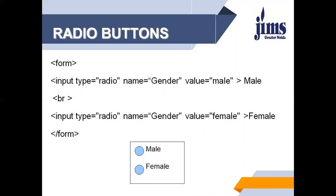In this example we have taken two radio buttons: male and female. Input type equals radio, name equals gender, value equals male. The other radio button: input type equals radio, name equals gender, value equals female. The name of both radio buttons will be the same and the value will be different — whatever value you want to display beside the radio button.